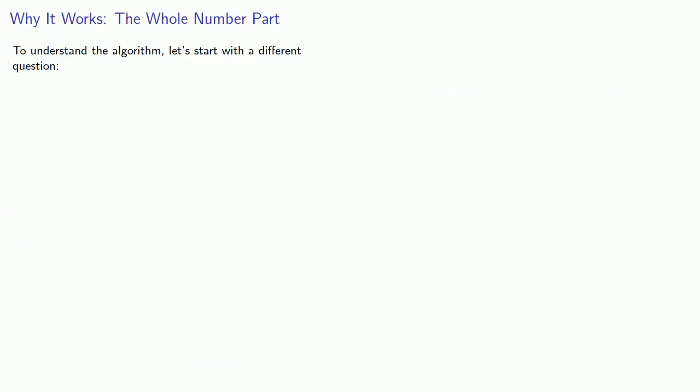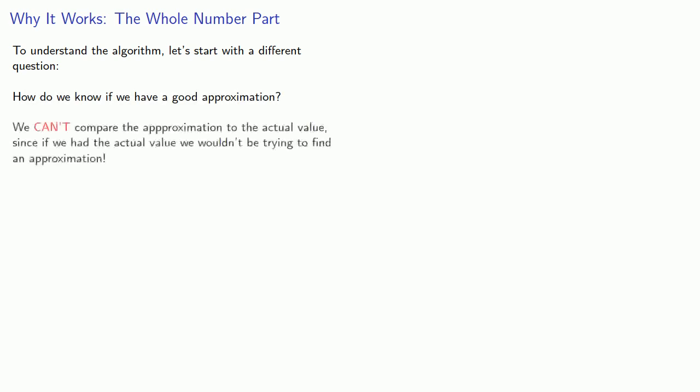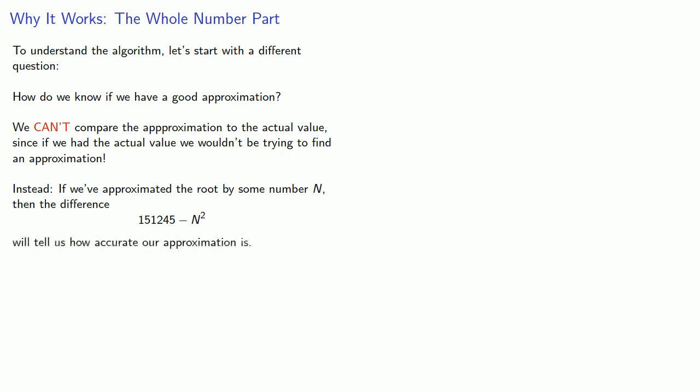To understand the algorithm, let's start with a different question: How do we know if we have a good approximation? We can't compare the approximation to the actual value, since if we had the actual value, we wouldn't be trying to find an approximation. Instead, if we've approximated the root by some number n, then the difference between the radicand and n squared will tell us how accurate our approximation is.